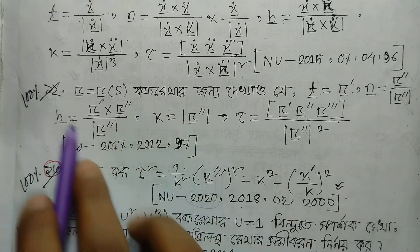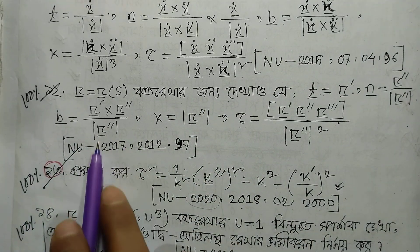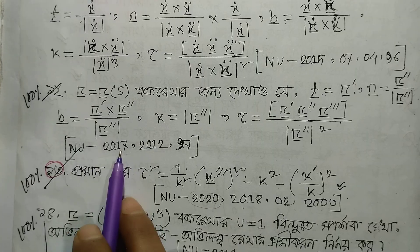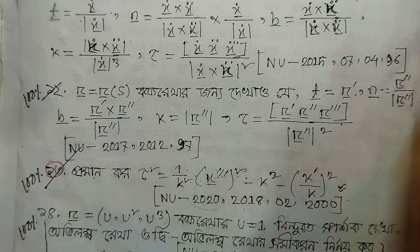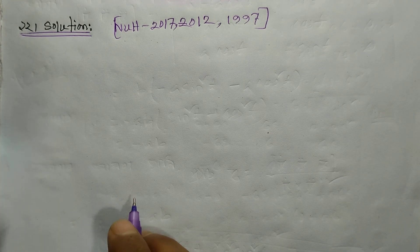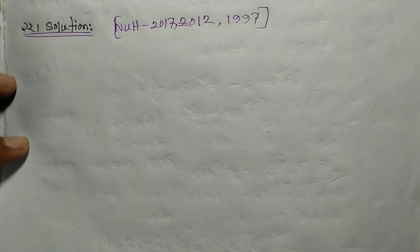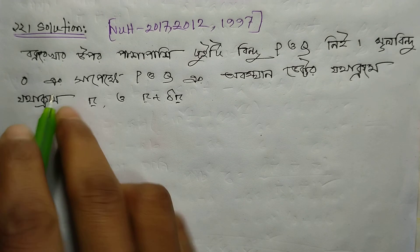So, we have to learn about this and we are going to learn about this. This is our first step. We will now mark two points on the curve and write them down.